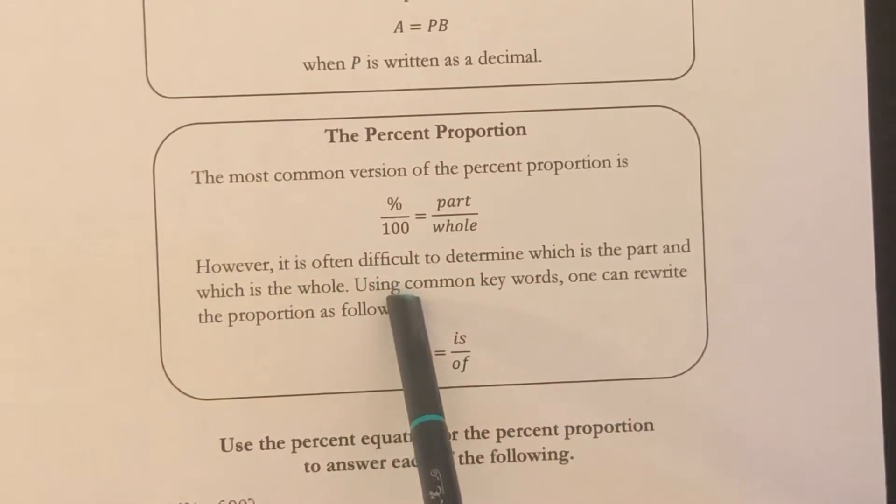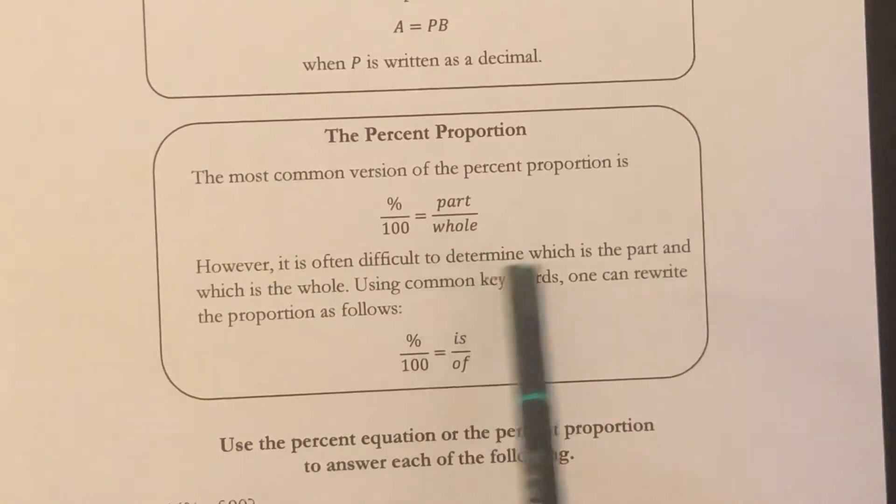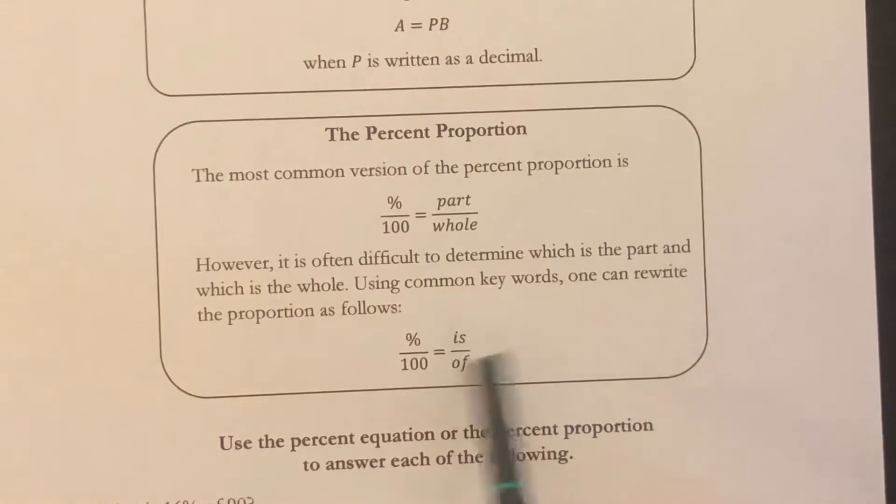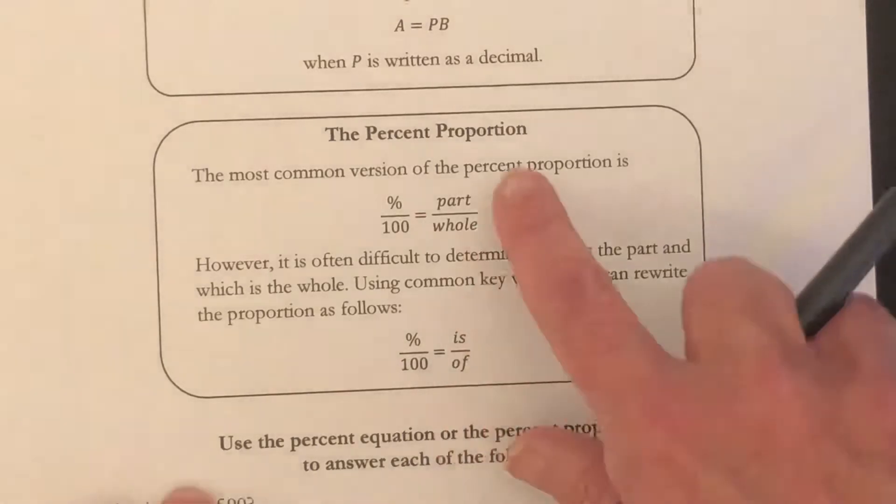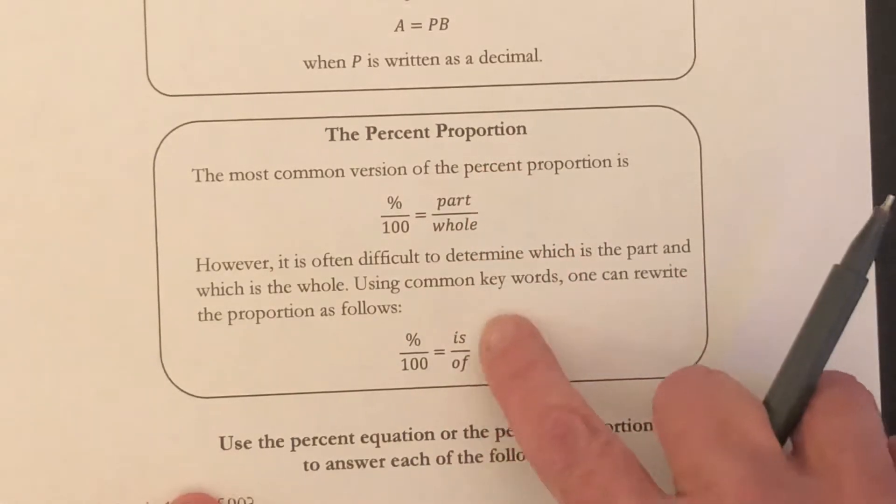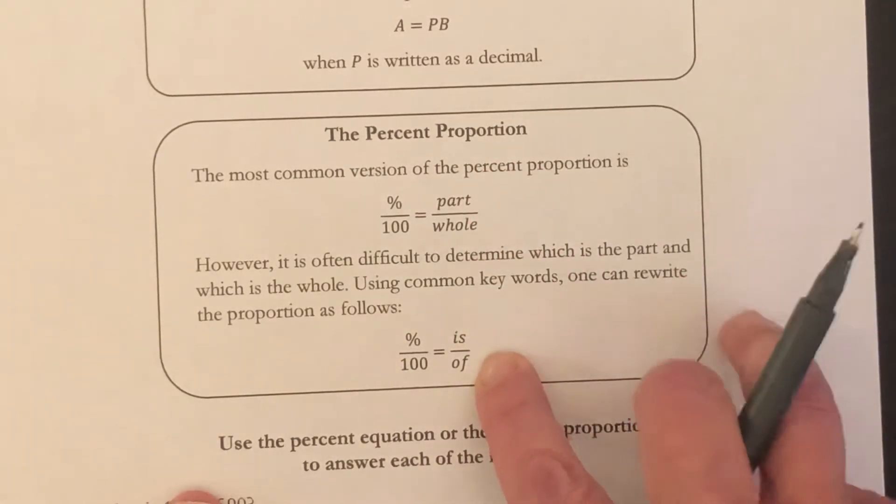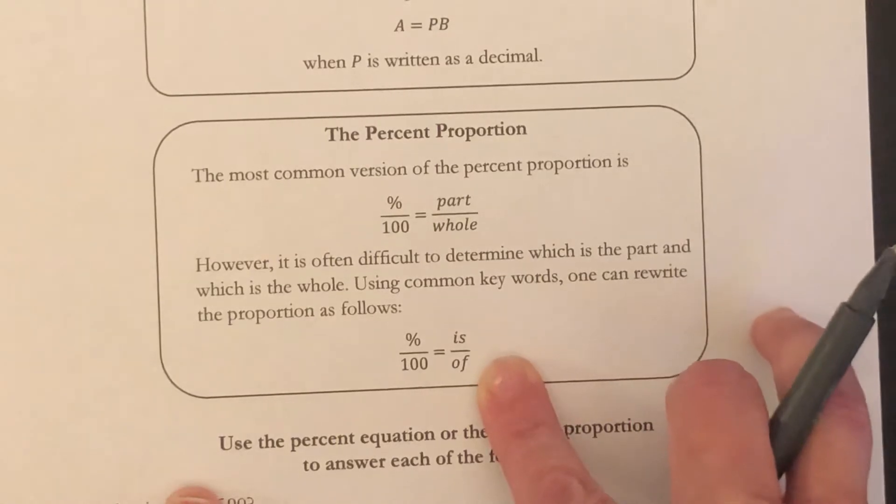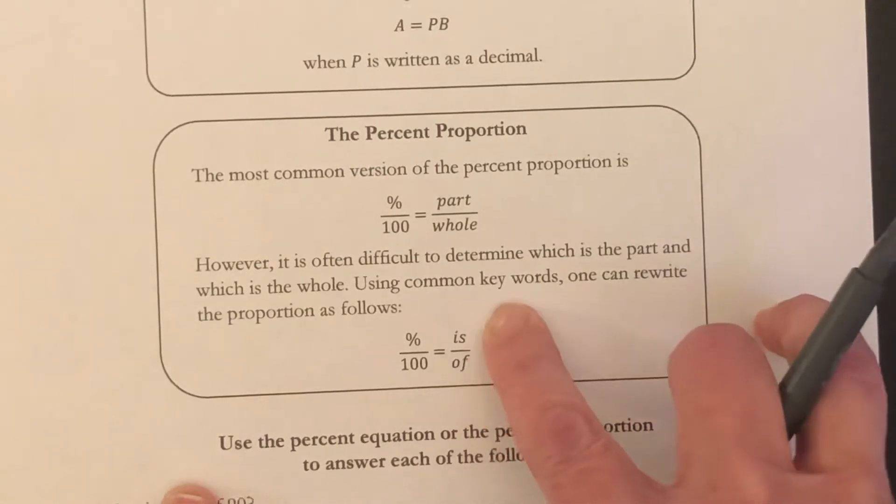The difficulty here is that it's sometimes difficult to determine which is the part and which is the whole. It's not always the larger number and the smaller number. So if we use keywords, we can change part over whole to is over of. Occasionally you'll have something written in past tense, so it will say was instead of is, but you won't have any trouble with that.